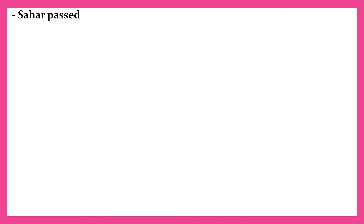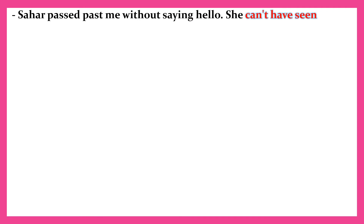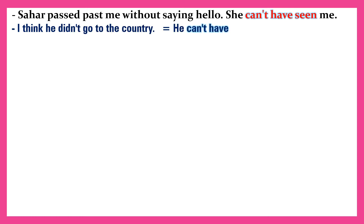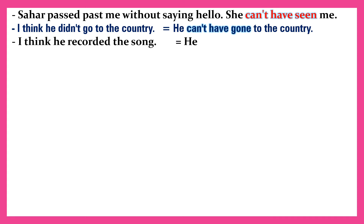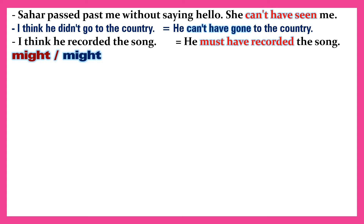Saha passed past me without saying hello — she can't have seen me. 'I think he didn't go to the country' equals 'he can't have gone to the country.' 'I think he recorded the song' equals 'he must have recorded the song.'